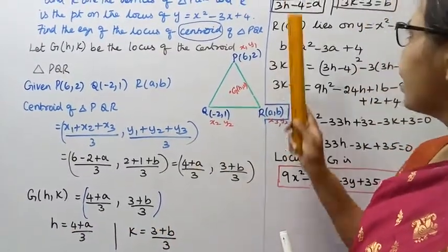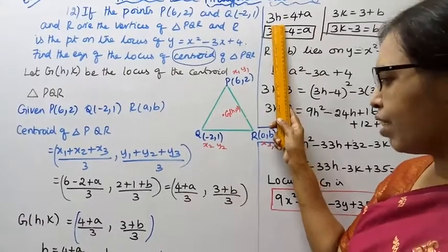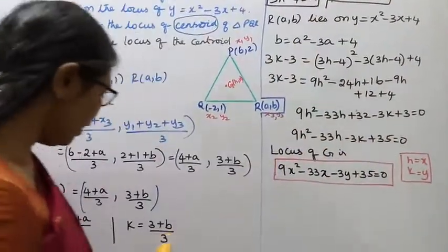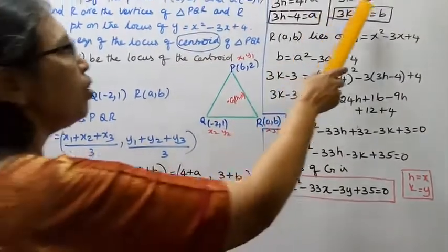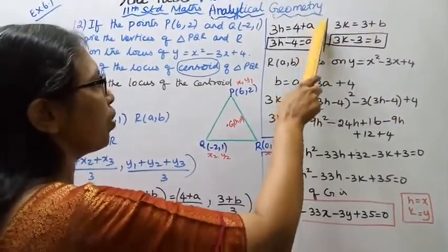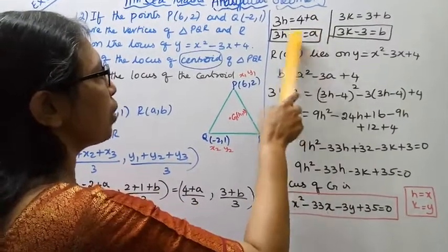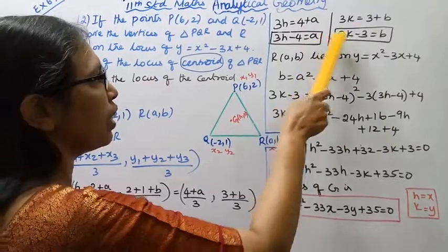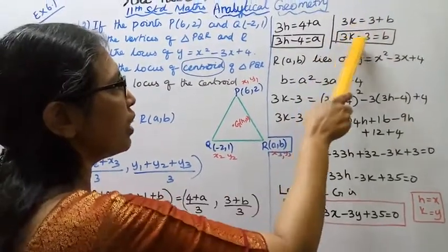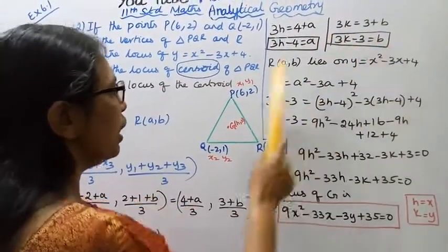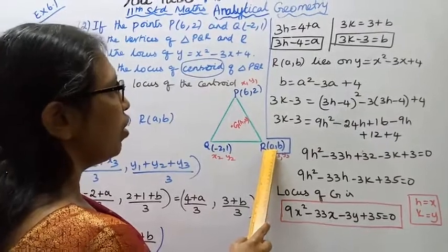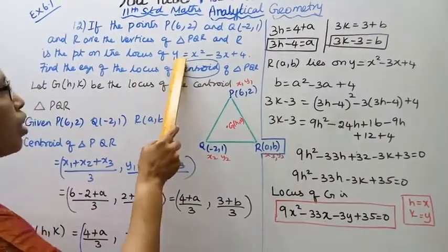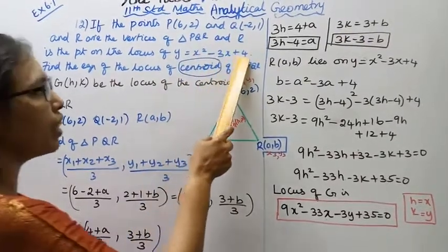From these equations: 3h equals 4 plus a, so a equals 3h minus 4. And 3k equals 3 plus b, so b equals 3k minus 3. Since R(a, b) lies on the locus y equals x squared minus 3x plus 4,